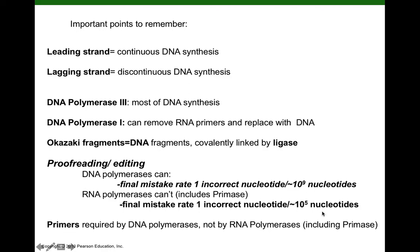This means the DNA polymerase's mistake rate is at least 10^4 times lower than the mistake rate made by RNA polymerases. So RNA polymerases may have a much higher mistake rate than DNA polymerases.